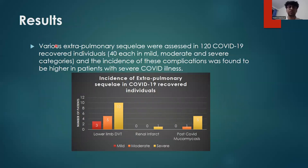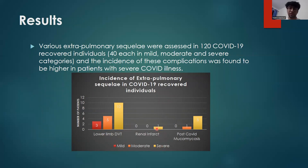Our study assessed 120 patients — 40 each in mild, moderate, and severe categories. Results showed that complications were more prevalent in patients with severe illness. Of the 40 severe patients, 10 presented with deep vein thrombosis, compared to 5 in the moderate category and 3 in the mild category. Only one patient in the severe category presented with renal infarct, and none in mild or moderate categories. Five patients in the severe category presented with post-COVID mucormycosis, one in the moderate category, and none in the mild category.